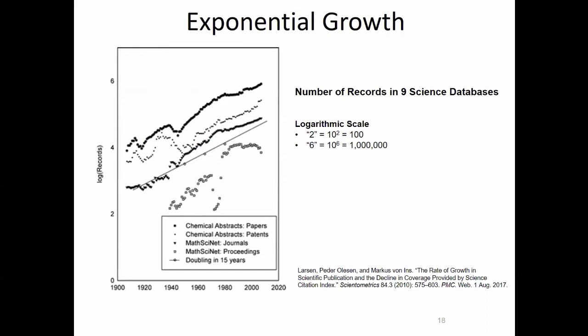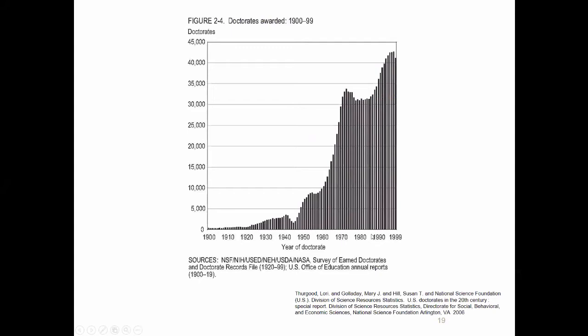These millions of journal articles are written by an increasing number of scholars. This graph covers 1900 through 1999 showing newly minted PhDs in the United States. In the early 1900s, there were probably about 100–150 new PhDs per year. Starting basically post-war, there's a huge increase in doctorates awarded. By 1999, over 40,000 new PhDs were minted in the United States alone — not counting Canada, Europe, China, Brazil, or India. So the total number globally is quite a bit larger.